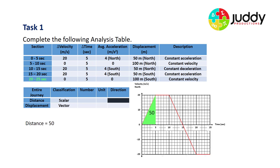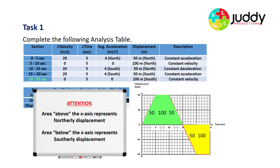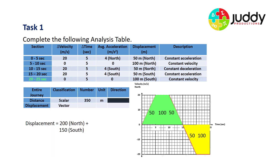In terms of distance: 50 in the first five, 100 in the second, 50 in the third, 50 in the fourth, and 100 in the fifth — totaling 350 meters traveled. The areas above the x-axis represent northerly displacement: 50 plus 100 plus 50 is 200 meters north. The yellow section below the x-axis represents 150 meters south. We have 200 meters north and 150 meters south — north is greater by 50 meters — so total displacement is 50 meters north.